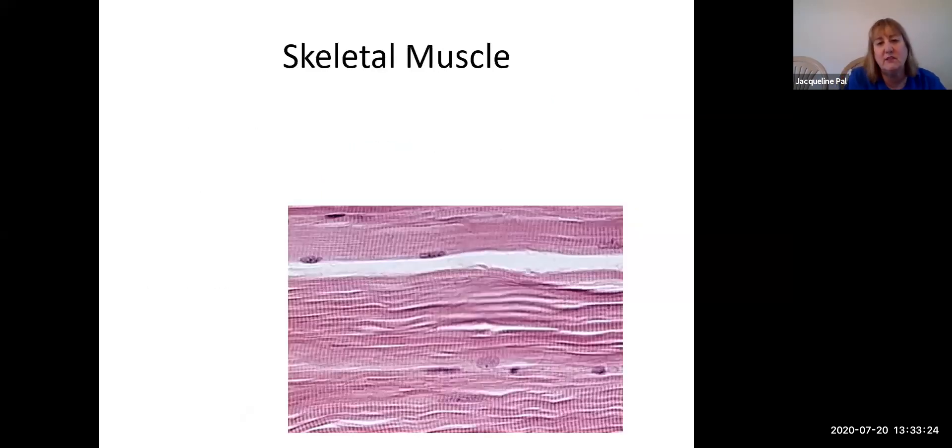Let's talk about skeletal muscle first. So when we look at skeletal muscle, you notice that these are long cells, which have what? Stripes. Do you see the stripes? Stripes. Officially called striations, but they're stripes. If this was black and white, it would look like a zebra.